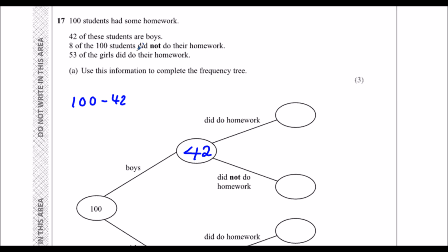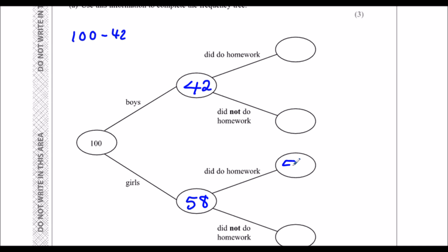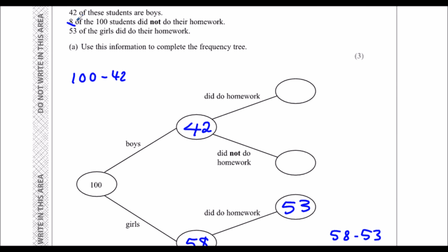Eight of the 100 students did not do their homework. 53 of the girls did do their homework. So girls did homework: 53. How many didn't? Well if there's 58 girls and 53 did the homework, 58 minus 53 is 5, so five girls did not do the homework. Now eight in total didn't do the homework.